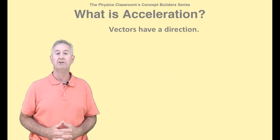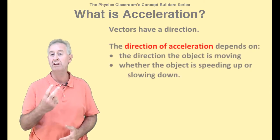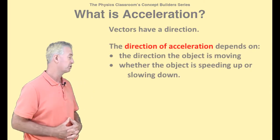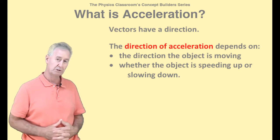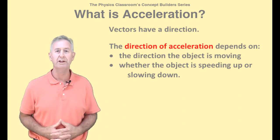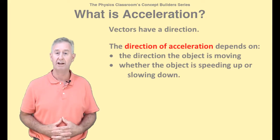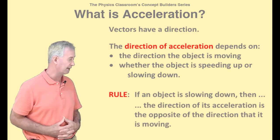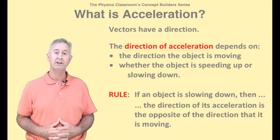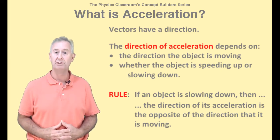To determine the direction of the acceleration, you need to know two things about the object. You need to know which direction the object is moving, and whether the object is speeding up or slowing down. The simplest rule that I can give you for determining the direction of acceleration is this: if an object is slowing down, then the direction of its acceleration is the opposite direction that it is moving.